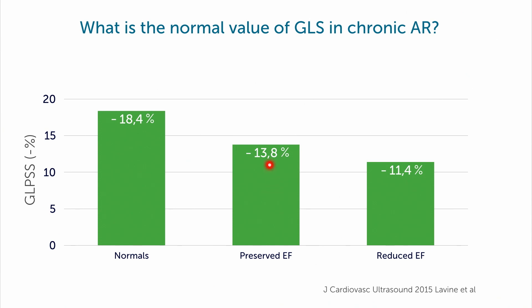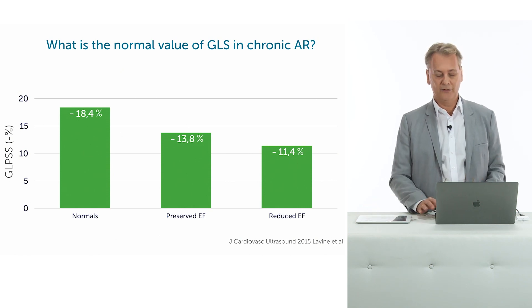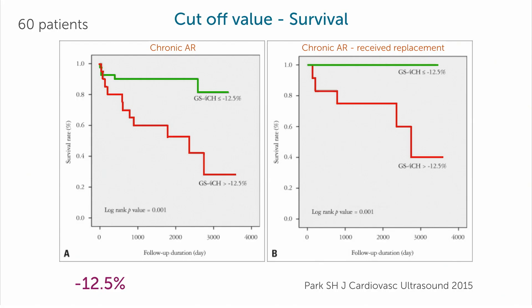Here is a study showing the mean value of global longitudinal strain in patients with preserved ejection fraction and chronic aortic regurgitation. Look how low it is — much lower than the minus 19% we saw in the previous study. It's higher than patients with reduced ejection fraction and lower than normals, but this does not tell us where the cutoff value should be. Another study used a cutoff value of minus 12.5%. Patients with a value below minus 12.5% have a very poor prognosis, whether or not they are operated. But this still might not be the optimal cutoff value. We probably need to use not an absolute strain value, but rather the change in strain over time — very similar to what is used in cardio-oncology, where we look for a change of more than 15% from one exam to the next to demonstrate cardiotoxicity. This is something we need to look at in more detail in the future.